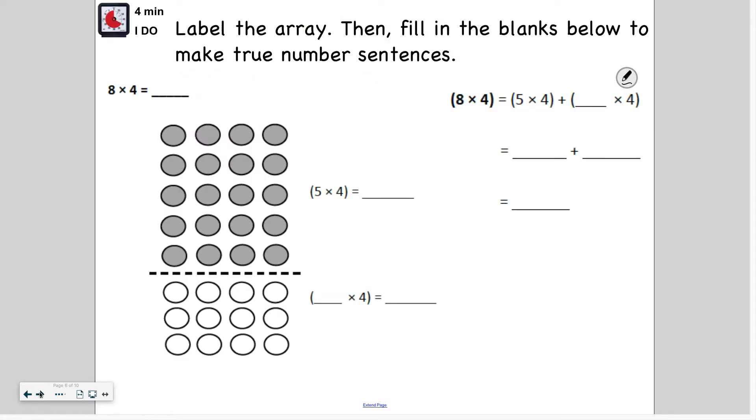So let's go ahead and try that. Here, I'm solving eight times four. So it says to label the array, then fill in the blanks below to make true number sentences. So they've broken apart the eight to be five plus something else. I know this because the four stays the same. So you have five times four, and something times four. So they haven't broken apart the four. Here I have five times four, it tells me here. And if I wasn't sure, I can count the rows. One, two, three, four, five. And I have one, two, three, four columns. That's five times four. So let me try here. I have three. So that means this is three times four. One, two, three, four.